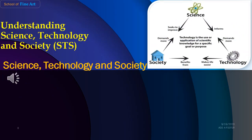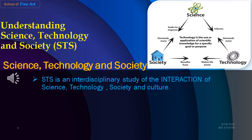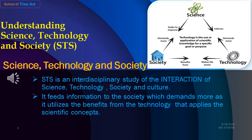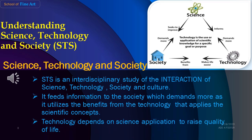We have individually defined what science, technology, and society are. Now let us understand Science, Technology, and Society together. Science, Technology, and Society — or STS — is an interdisciplinary study of the interaction of science and technology with society and culture. Science, as the body of knowledge, provides the facts, principles, and ideas to improve existing technology or serve as baseline information for new emerging technology. It also feeds information to society, which demands more as it utilizes the benefits from technology that applies scientific concepts. Technology, on the other hand, depends on science and applies it to raise the quality of life of the people. Thus, the figure depicts the synergetic relationship of science, technology, and society.